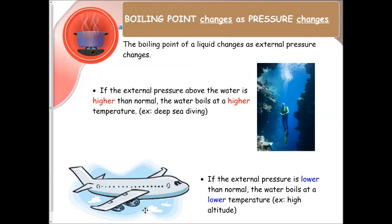If the external pressure is lower than normal, the water will boil at a lower temperature. An example of this is high altitude. If you're boiling water to make coffee on an airplane, you do not have to heat it to 100 degrees Celsius. It will be much lower because the pressure up there is much lower.